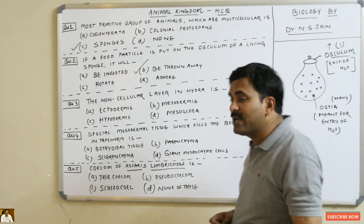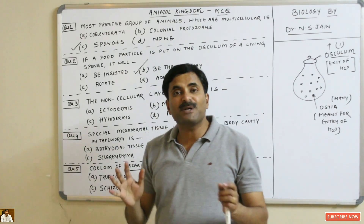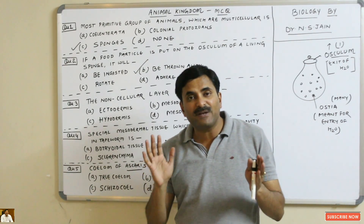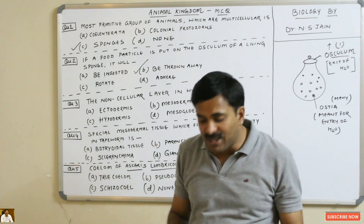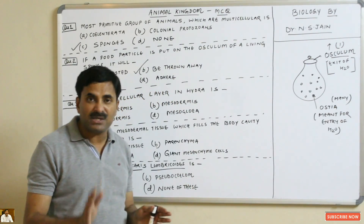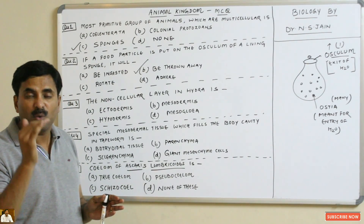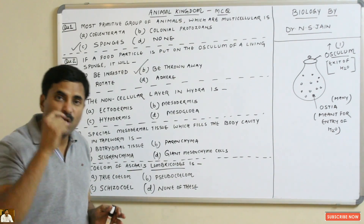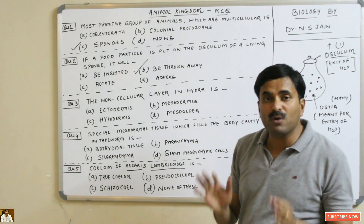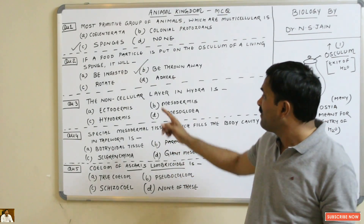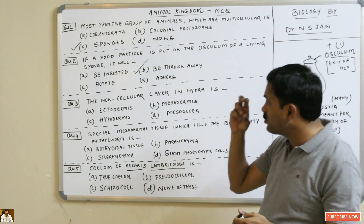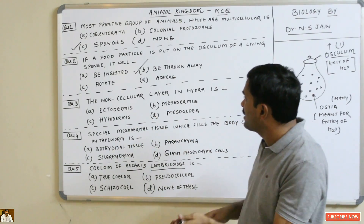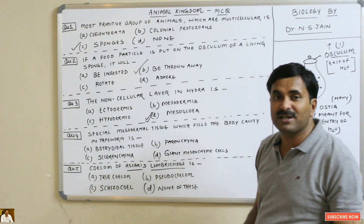The third question is: what is the non-cellular layer in Hydra? Hydra belongs to phylum Cnidaria. Cnidarians are diploblastic, meaning they have two germ layers — ectoderm and endoderm. In between these two layers, a non-cellular layer is found called mesoglea. So the correct answer is option D — mesoglea.